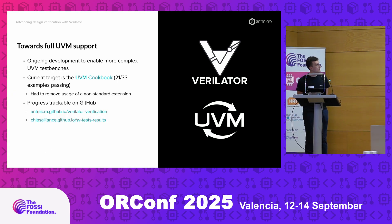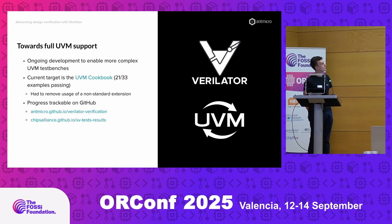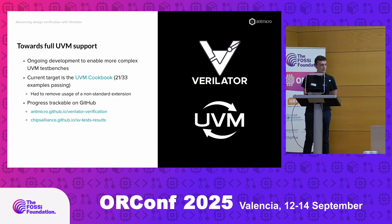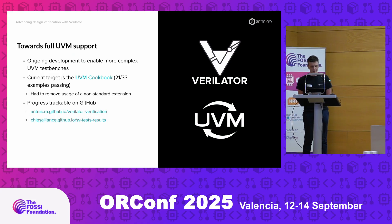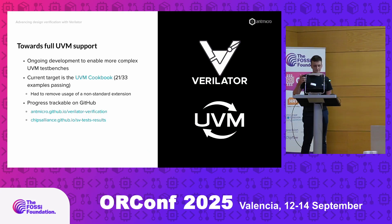We've been contributing to Verilator for quite a while now with the goal of supporting UVM fully, and we've been working on enabling more and more complex test benches over the years. A current target is supporting the UVM cookbook examples — UVM cookbook is a popular guide for UVM — and there are 33 examples specifically. We have 21 of these actually passing, and the ones that aren't passing already compile, except for one, but they have some runtime issues.